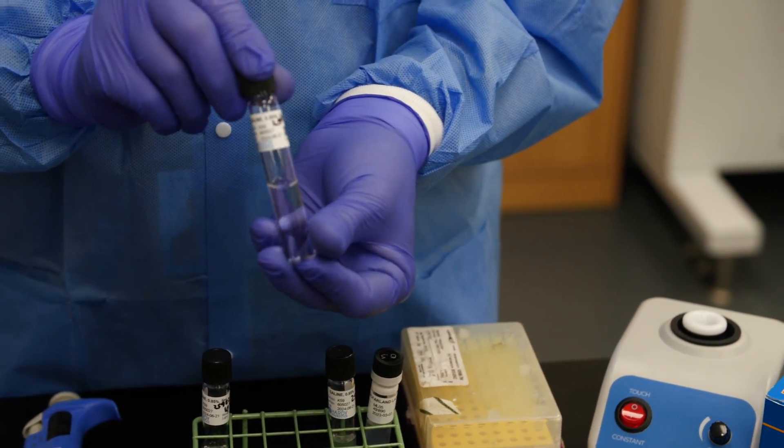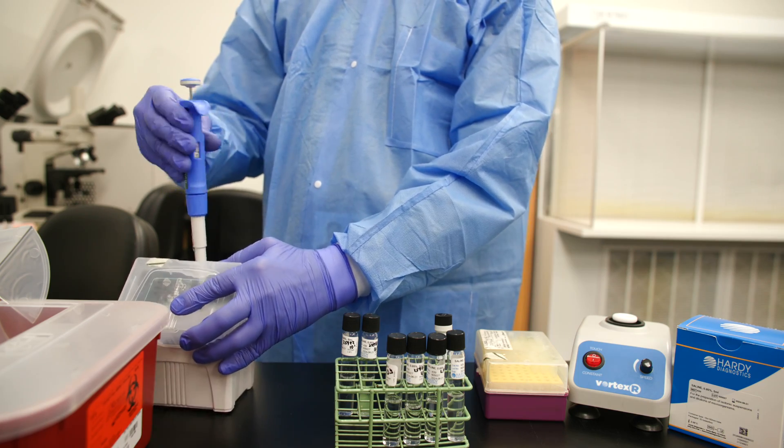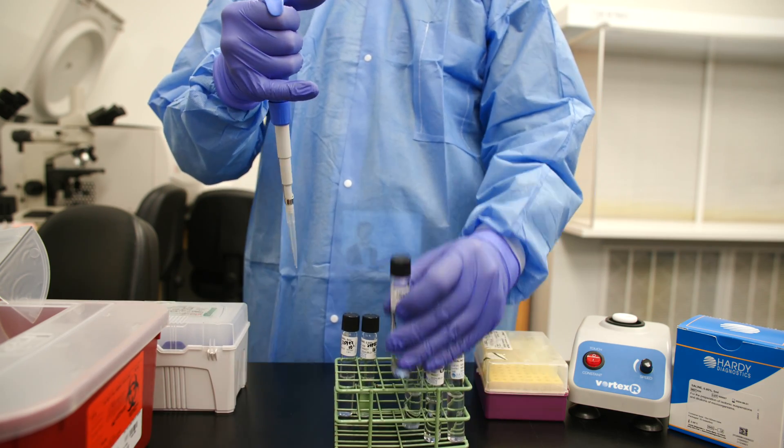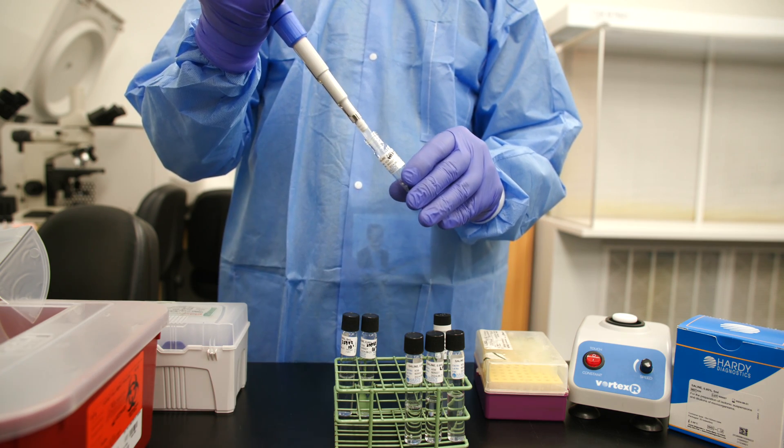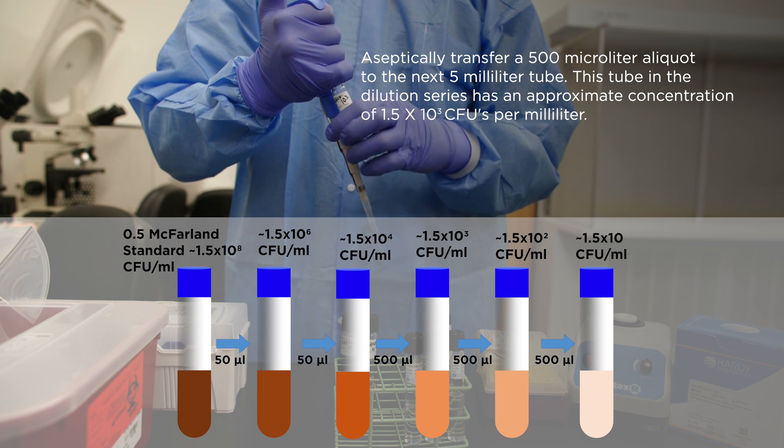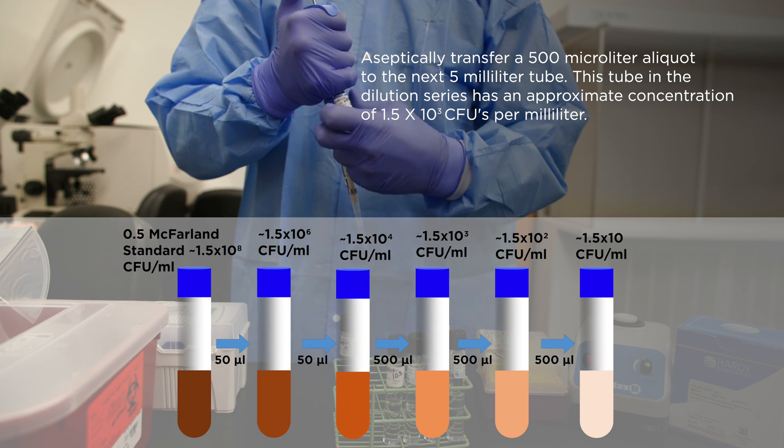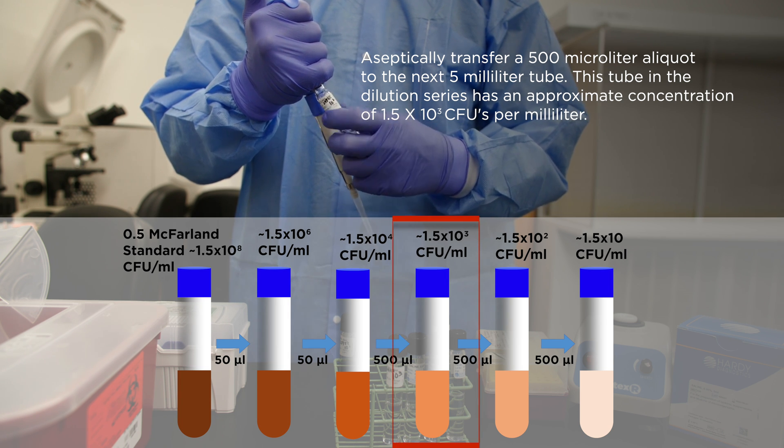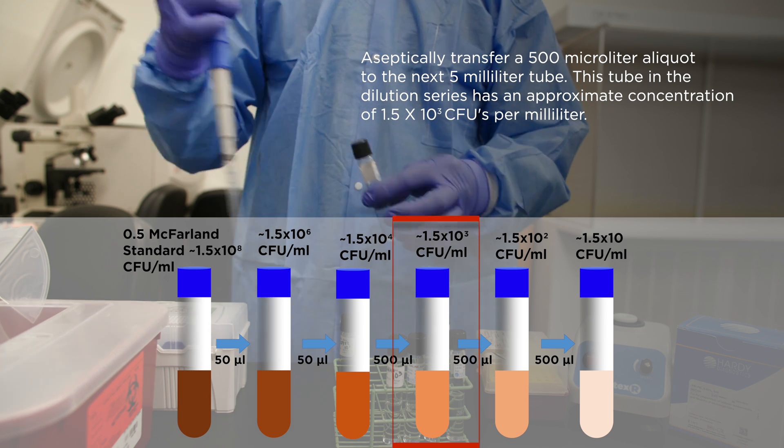For the next three tubes in this example, we will reduce the concentration by 10 fold, rather than 100 fold. Note that since this is a lower dilution factor than the previous example, the aliquot is larger. Aseptically transfer a 500 microliter aliquot to the next 5 milliliter tube. This tube in the dilution series has an approximate concentration of 1.5 times 10 to the 3rd CFUs per milliliter.